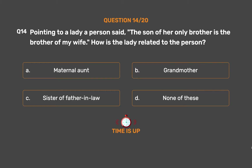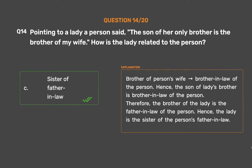The correct answer is Option C: Sister of father-in-law. The brother of the person's wife is the brother-in-law of the person. Hence, the son of the lady's brother is the brother-in-law of the person. Therefore, the brother of the lady is the father-in-law of the person. Hence, the lady is the sister of the person's father-in-law.